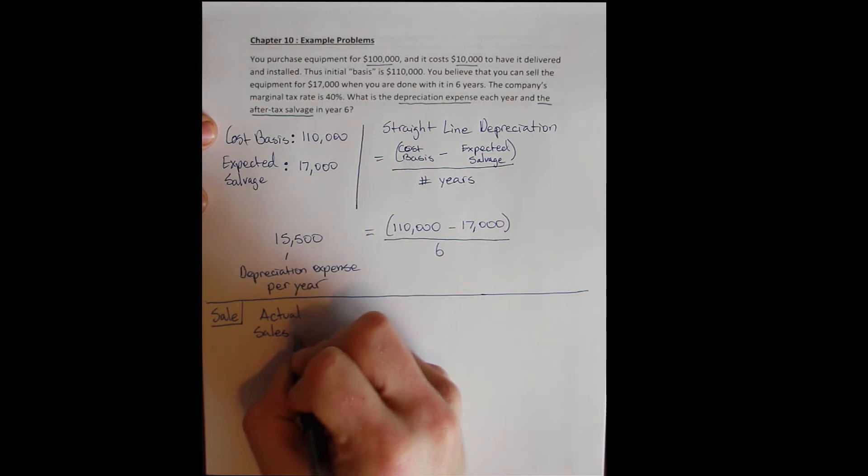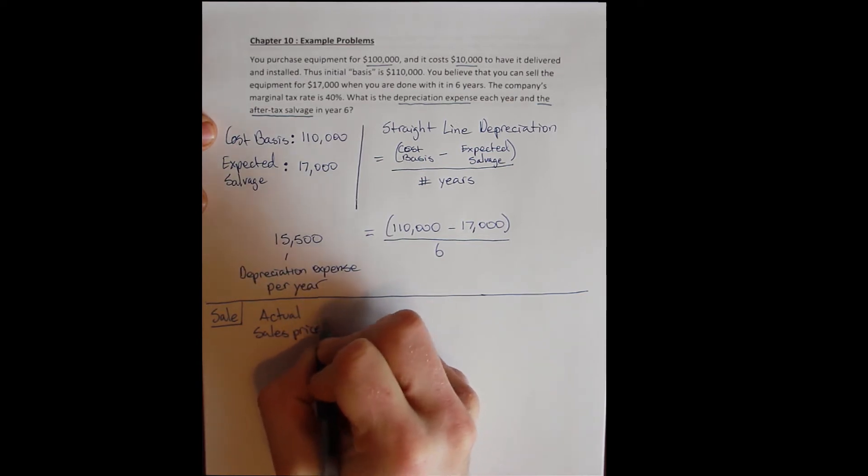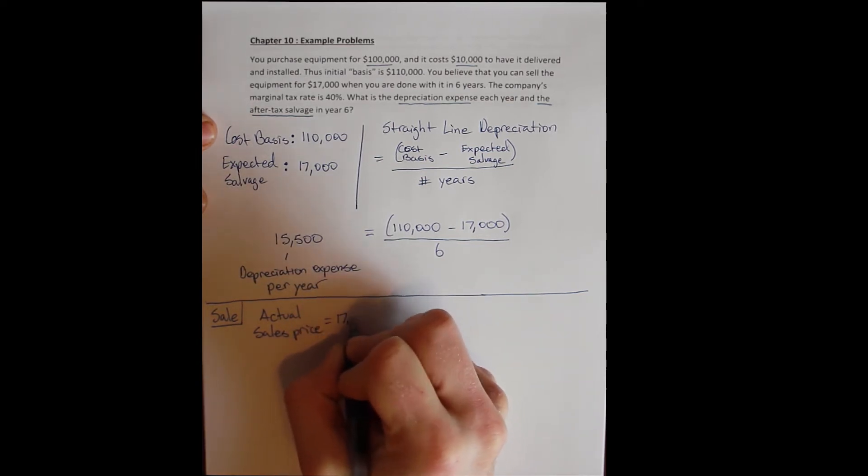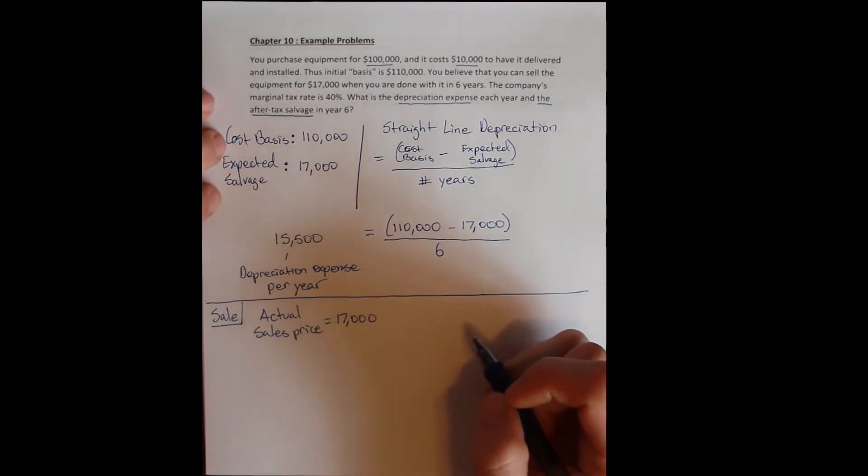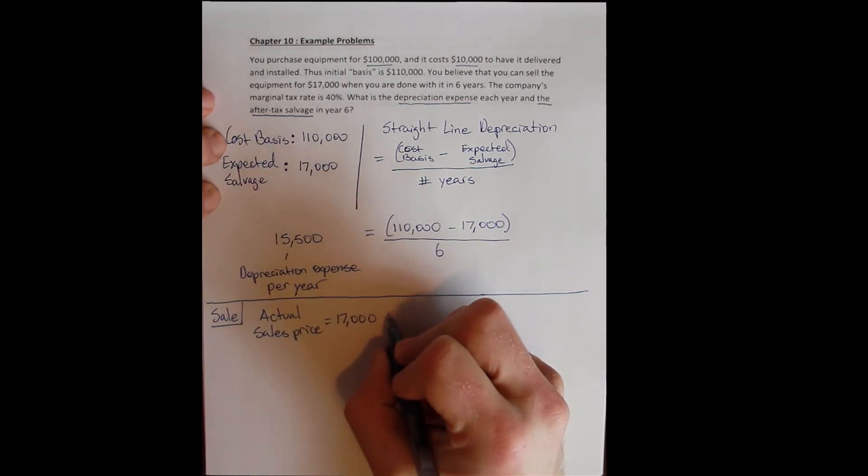The actual sales price is the same. What we actually sell it for is exactly what we expected to do. So we expected to sell it for $17,000. And our actual sales price was $17,000. We hit it right on the nose. Now, of course, we should acknowledge that this almost never happens. And that we would almost always be wrong about our expected salvage value. However, let's make it easy on ourselves when we're learning.